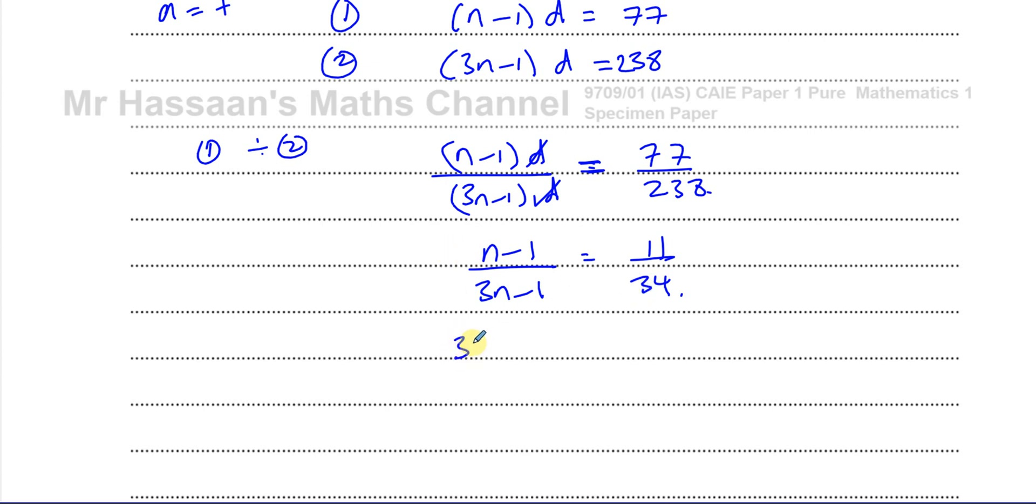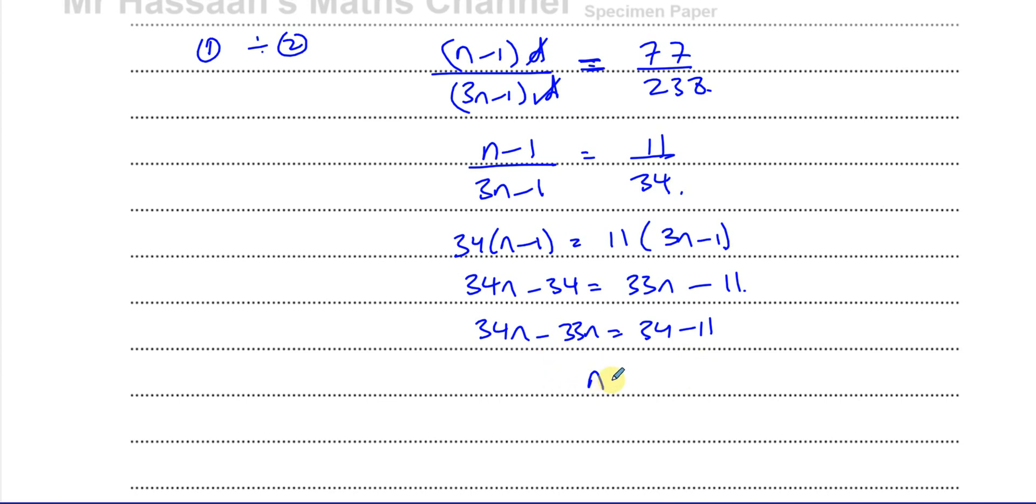I can say that 34 times n minus 1 is equal to 11 times 3n minus 1. So I'm left with 34n minus 34 equals 33n minus 11. So now I can solve this simple linear equation. I can subtract 33n from both sides and add 34 to both sides. So I end up with 34n minus 33n equals 34 minus 11. So that gives me n equals 34 minus 11 is 23. So n is equal to 23.